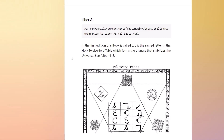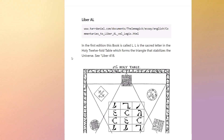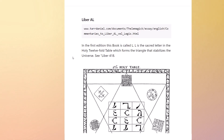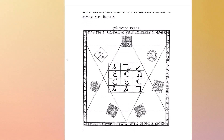In the first edition, this book is called El — the letter El. El is the sacred letter and the holy 12-fold table, which forms the triangle that stabilizes the universe. See Liber 418, which of course is the Enochian Aethers.